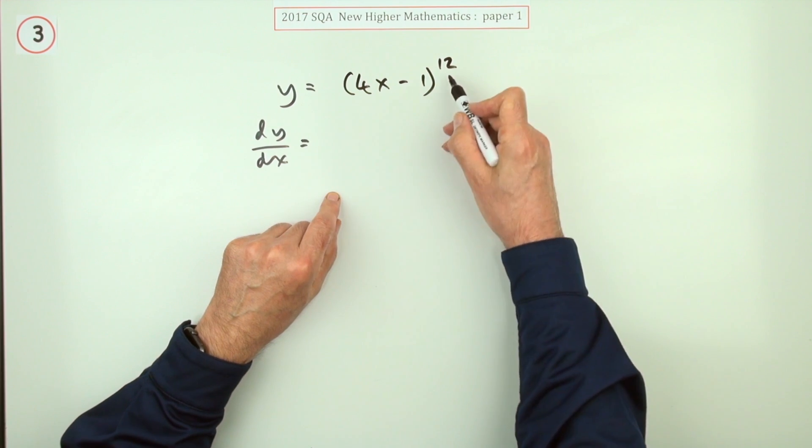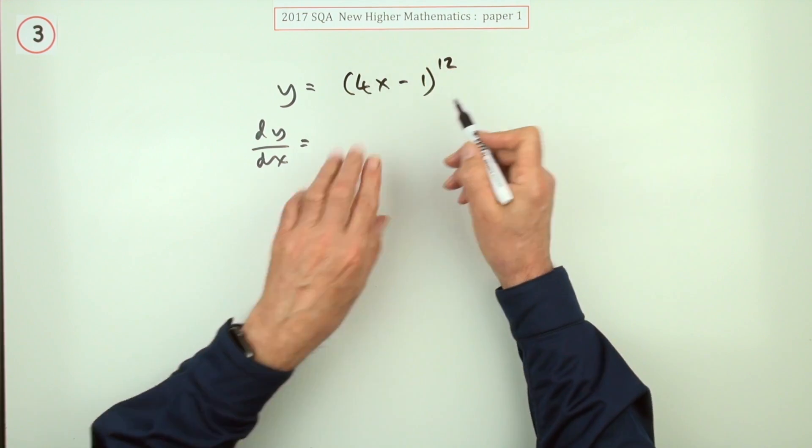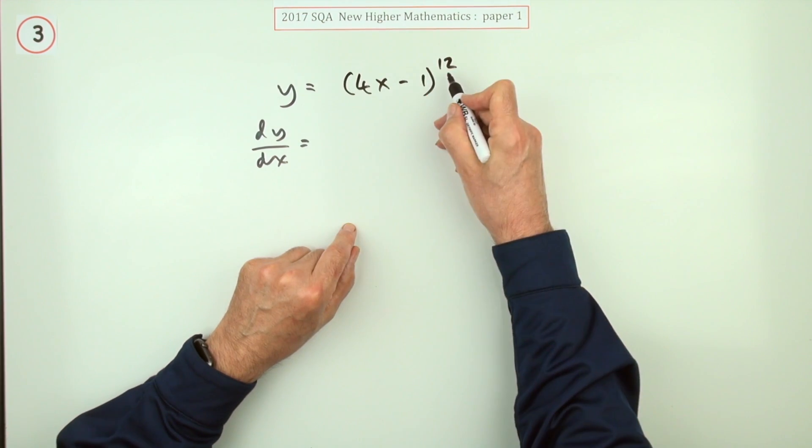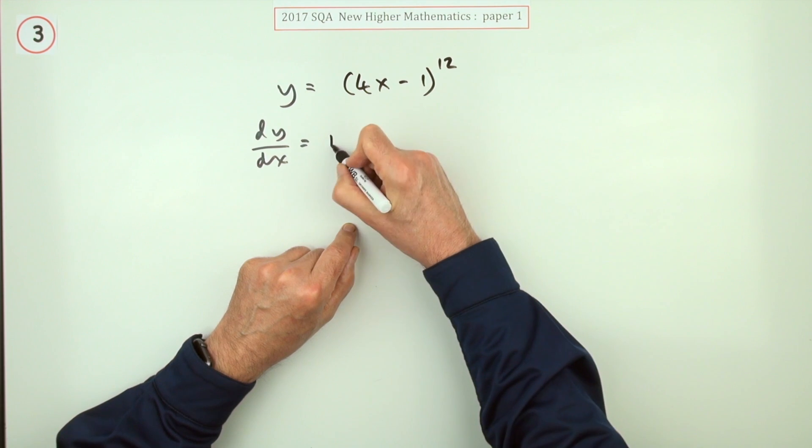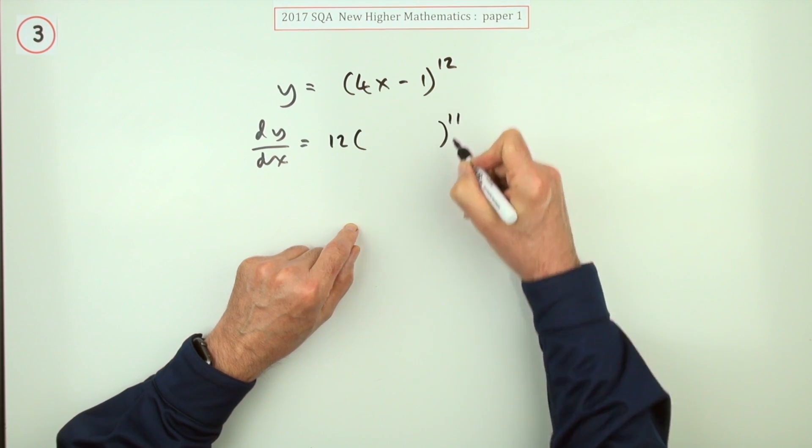Just deal with the outside function first, forget the inside of the bracket. Multiply by the power, take one off the power: 12 times the bracket to the power 11.